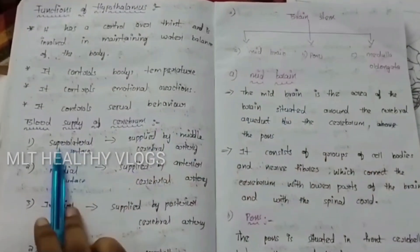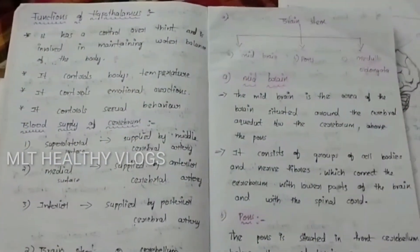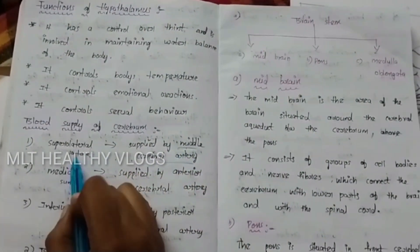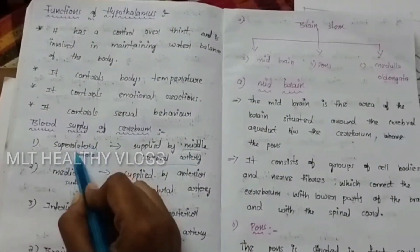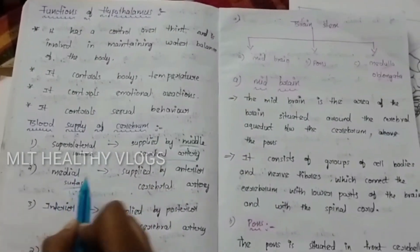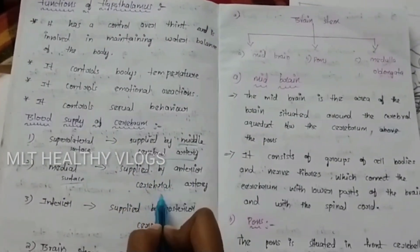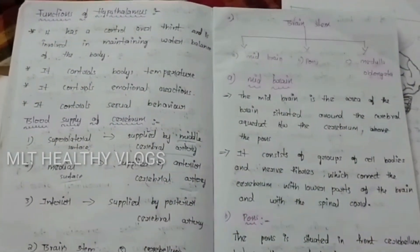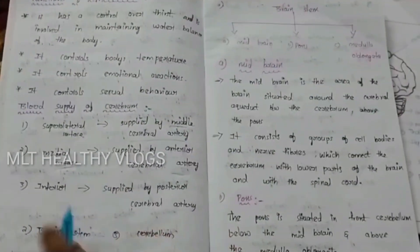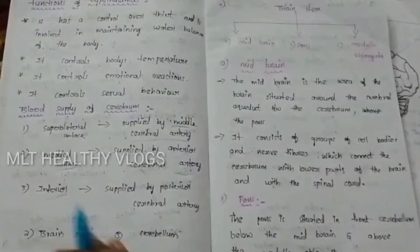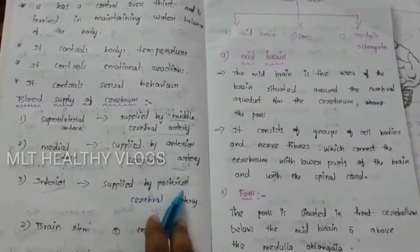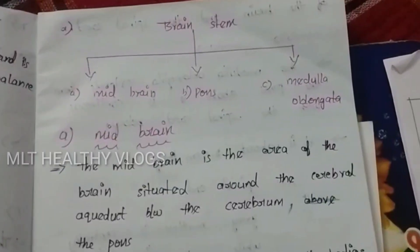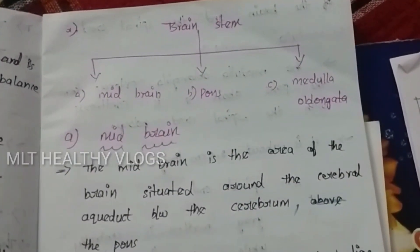The lateral surface of the cerebrum is supplied by the middle cerebral artery. The medial surface is supplied by the anterior cerebral artery. The inferior surface is supplied by the posterior cerebral artery.